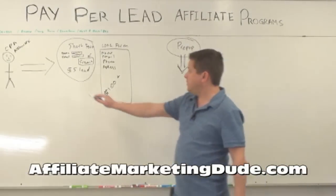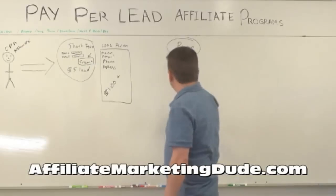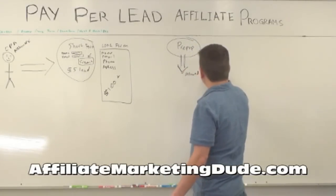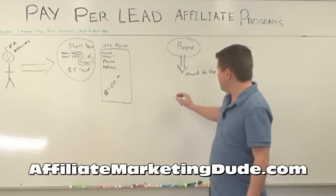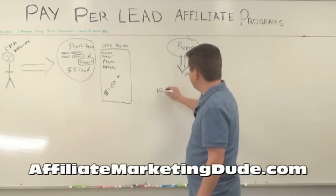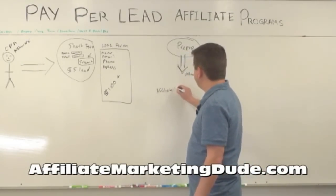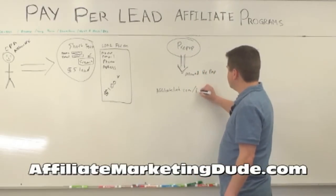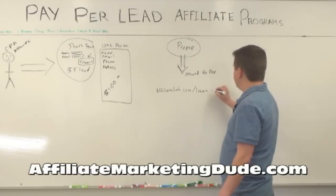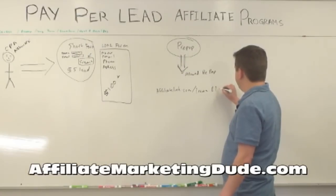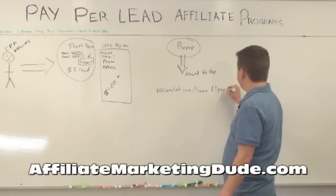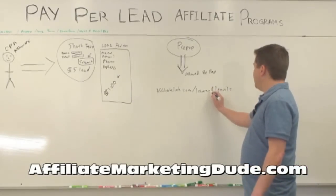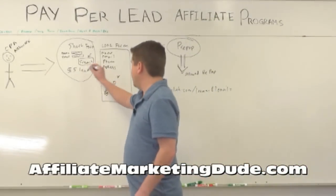When you go to your CPA network and find your offer, it will say whether pre-pop is allowed. The affiliate link structure looks something like: affiliatelink.com/?name= and ?email= — whatever you put after those parameters will pre-populate the form. This is one way to get an absolutely killer conversion rate.